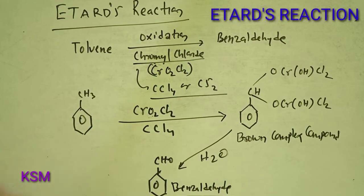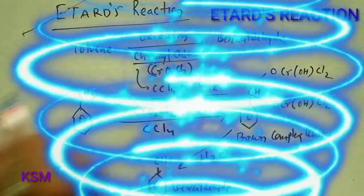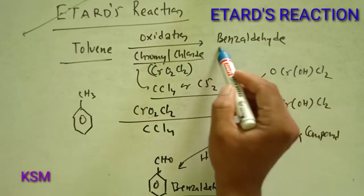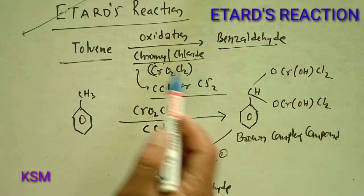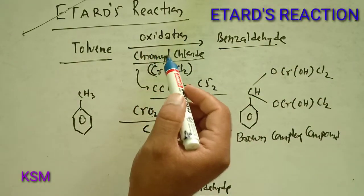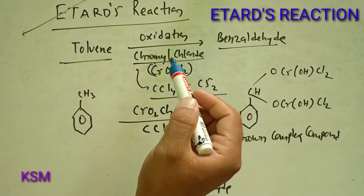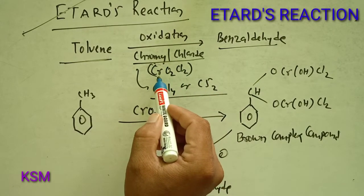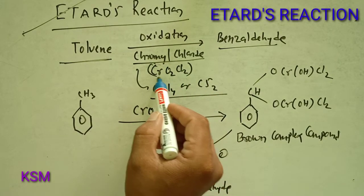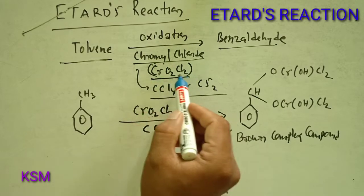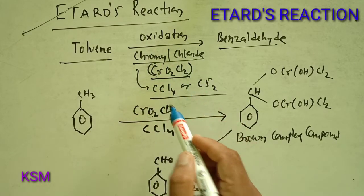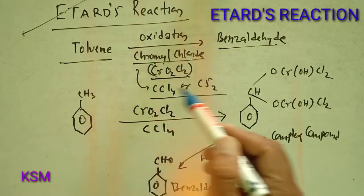So overall, in this reaction we see how toluene is converted to benzaldehyde. This is done by an oxidation process, meaning an oxidizing agent is required, which is chromyl chloride with formula CrO₂Cl₂. This reaction takes place in the presence of a solvent — carbon tetrachloride or carbon disulfide.